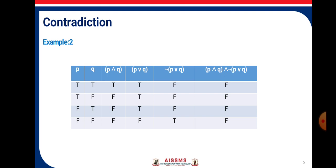Now let us take another example for contradiction. P has the truth values T, T, F, F and Q has the truth values T, F, T, F. P and Q gives us T, F, F, F. P or Q gives T, T, T, F. Negation of (P or Q) gives F, F, F, T. The AND operation of (P and Q) and negation of (P or Q) gives us F, F, F, F. As we see all the truth values are F, it is contradiction.